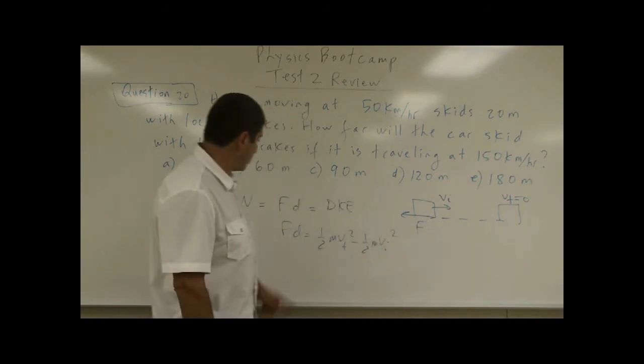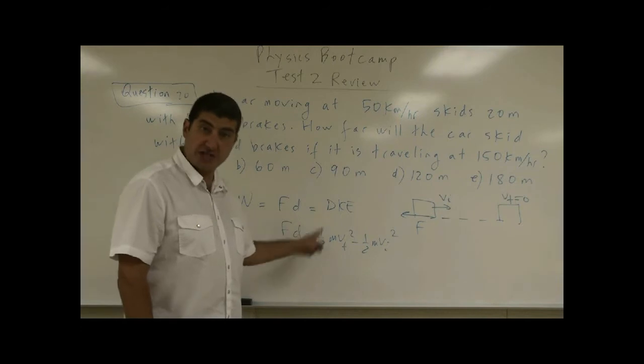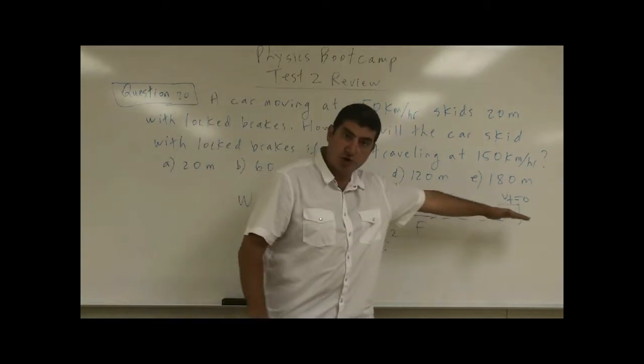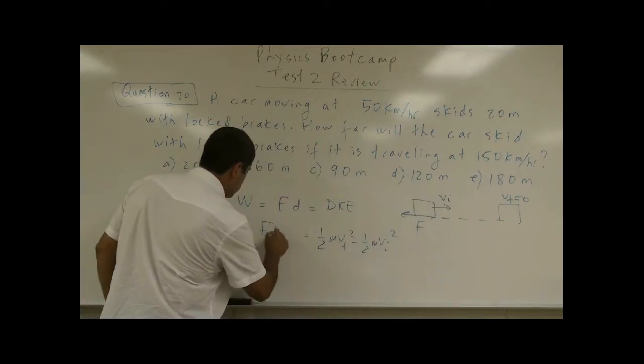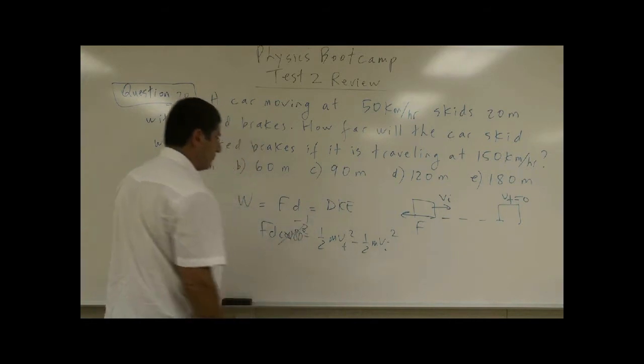So the work done by friction is FD. Actually, it's cosine of 180, right? Because it's opposite to the direction of motion of the car. So it's FD cosine of 180, which is going to be negative one, right?